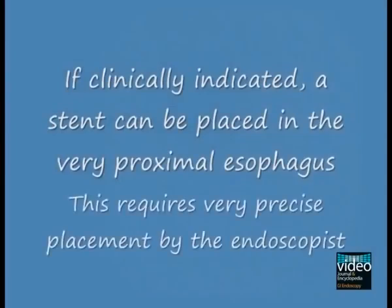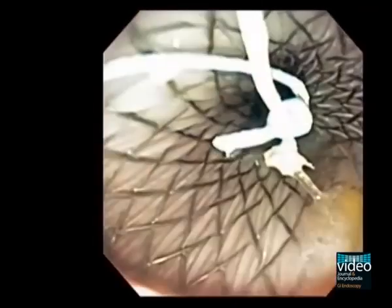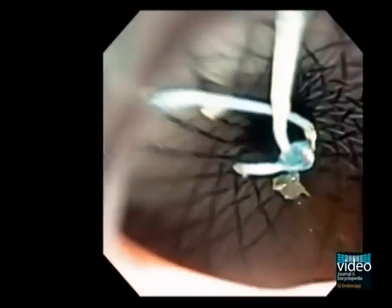If clinically indicated, a stent can be placed in the very proximal esophagus. This requires very precise placement by the endoscopist. Here you see a fully covered stent placed immediately below the upper esophageal sphincter in a patient with a very proximal cancer. This patient tolerated the stent well.